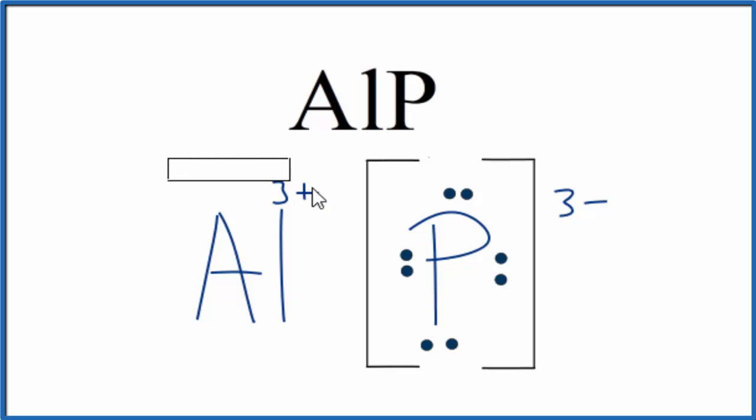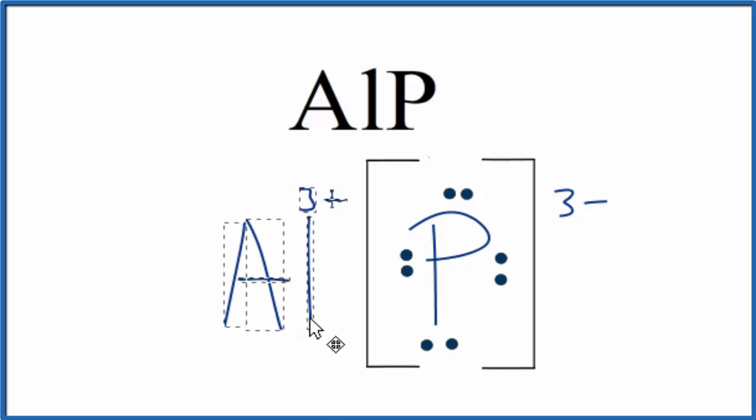We have a positively charged aluminum ion, that negative phosphide ion. They attract each other, that's what forms the ionic bond in AlP. So this is the Lewis structure for AlP, aluminum phosphide.